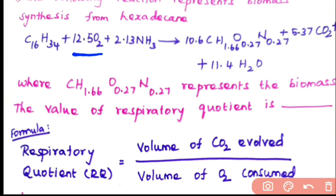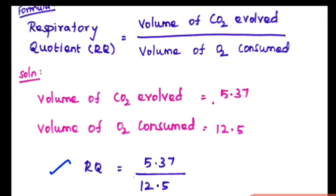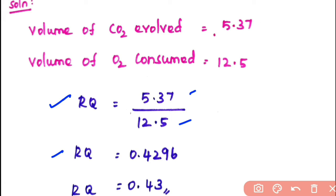So just substitute in this equation and you will get the answer. RQ equals volume of CO2 evolved, that is 5.37, divided by volume of O2 consumed, 12.5. So RQ equals 5.37 divided by 12.5, which equals 0.4296, or approximately 0.43.